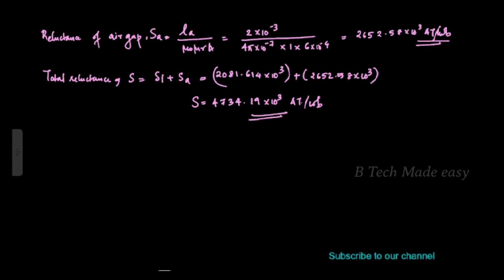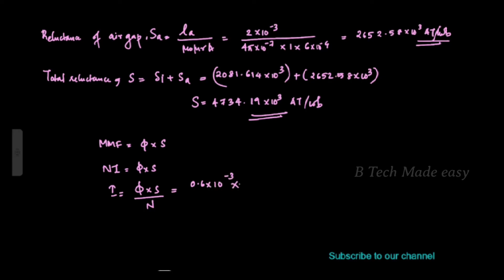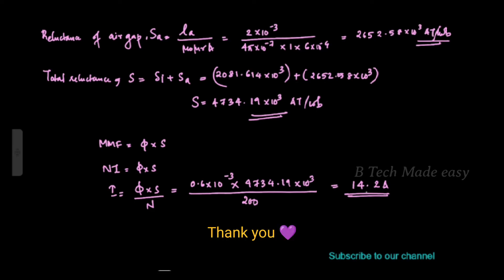The MMF F is equal to φ into S. The current I equals φ into S divided by N. With φ equal to 0.6 into 10 raise to minus 3, total reluctance S equal to 4734.19 into 10 raise to 3, divided by N equal to 200, the current is equal to 14.2 amperes. So the current required in the 2 mm air gap to produce the same flux of 0.6 milliweber is 14.2 amperes.